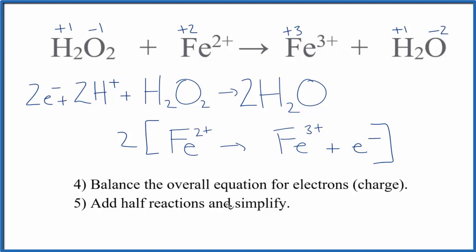Now we're going to add the half reactions together and simplify. So for the reactants we have these plus two times the Fe2+. Those are the reactants. And the products we have two waters and two times these here. That looks like this.